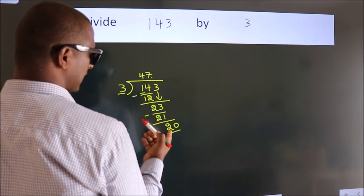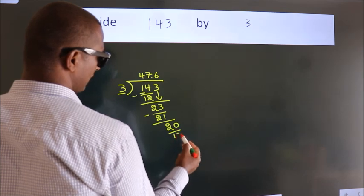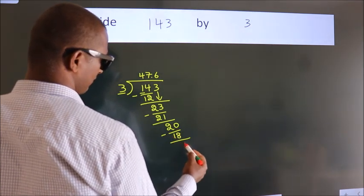A number close to 20 in the 3 table is 3 sixes, 18. Now we subtract. We get 2.